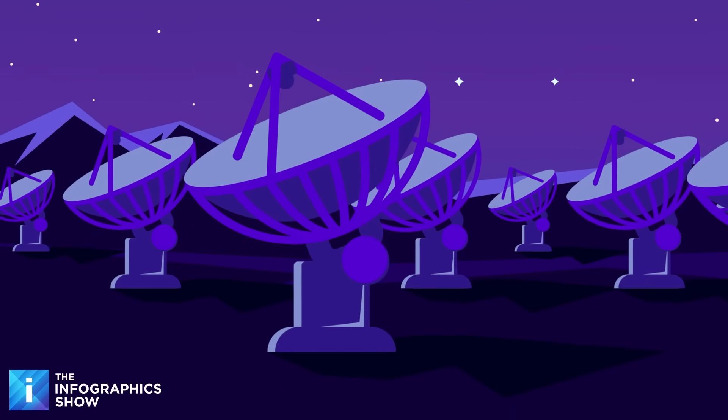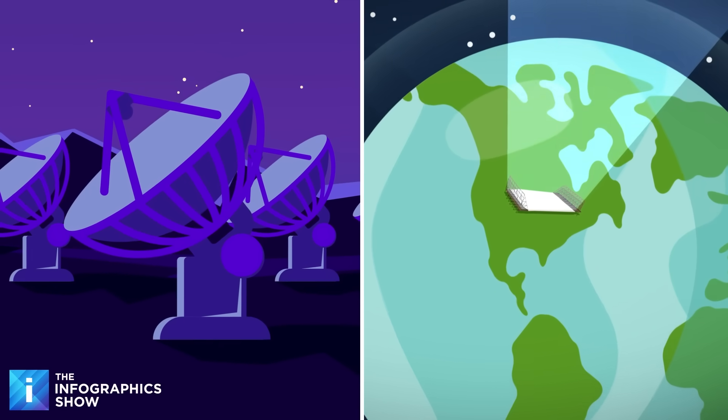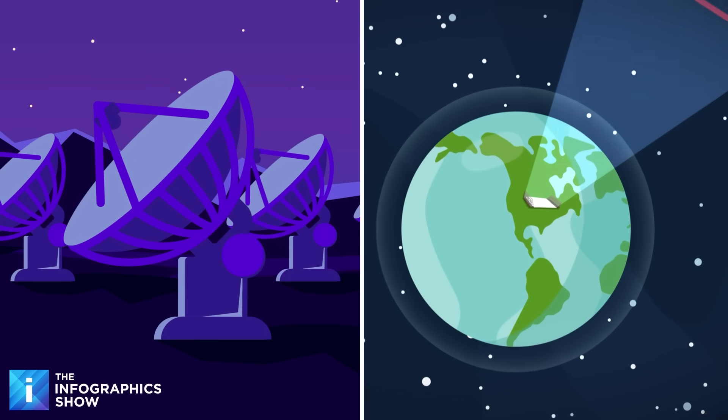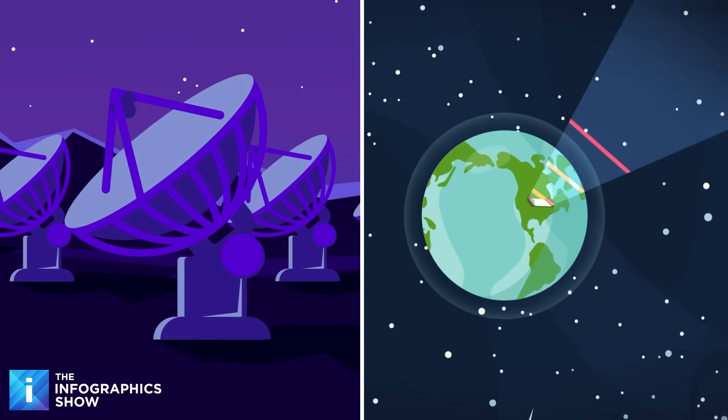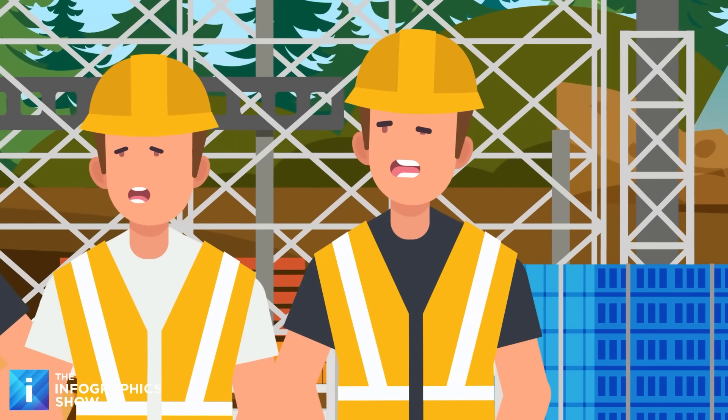Most radio dishes were designed to move and track objects across the sky. Krause's Big Ear would do something far more elegant. It would just sit perfectly still and let Earth's rotation do the scanning. As our planet spun on its axis, the telescope's beam would sweep across the heavens.